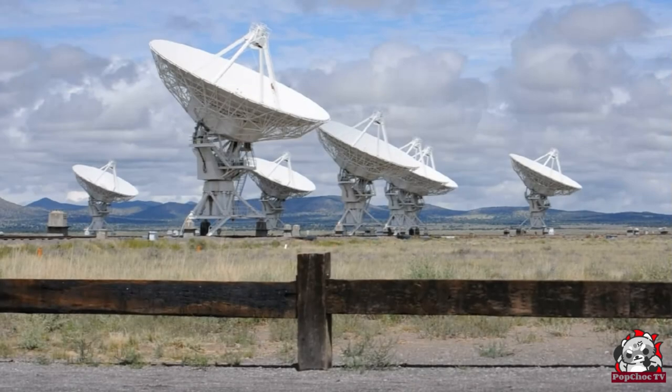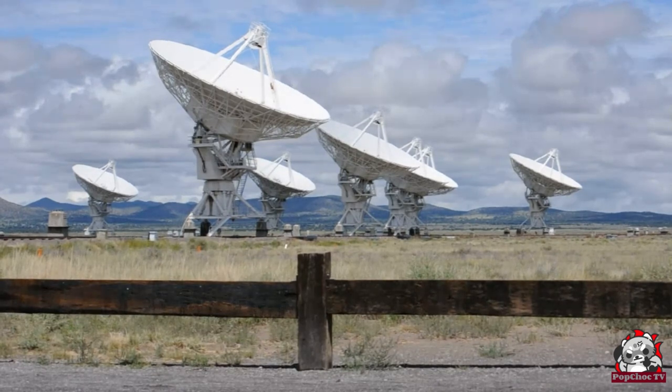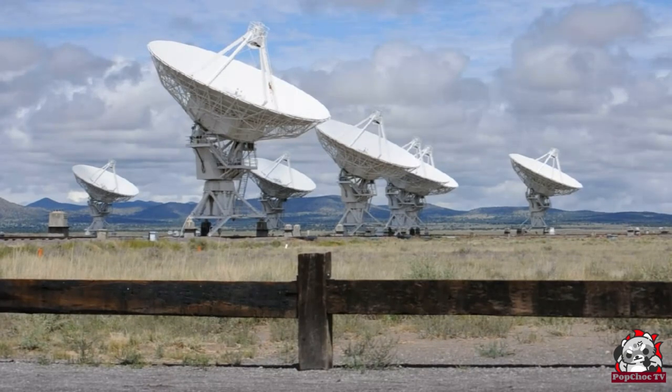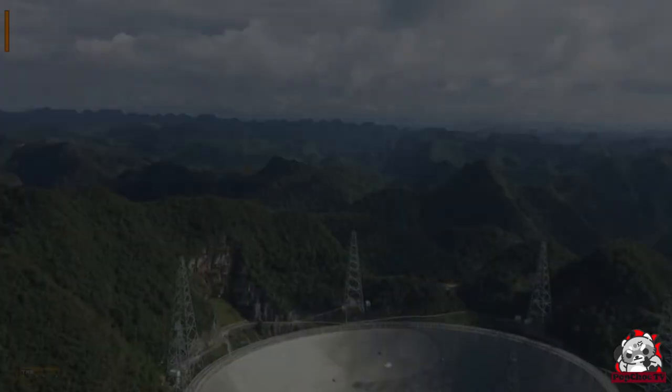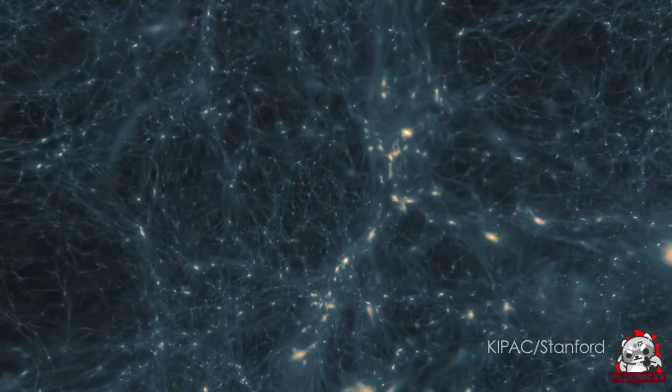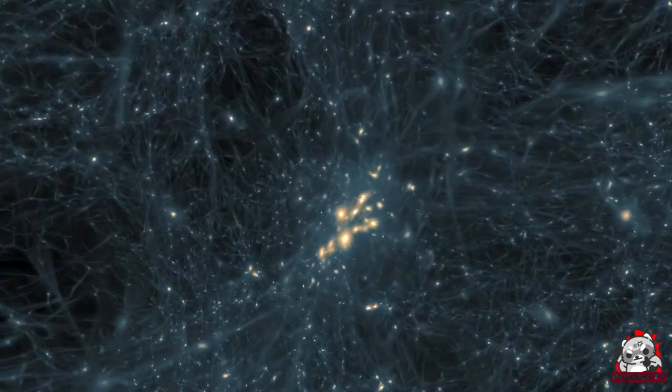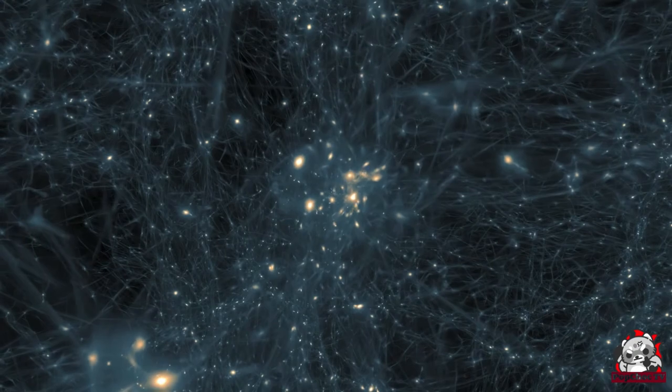At number 7, we have the mystery of fast radio bursts. Fast radio bursts, or FRBs, are extremely powerful and brief bursts of radio waves originating from deep space. First detected in 2007, these enigmatic signals have puzzled astronomers ever since. Some FRBs repeat, while others appear only once, adding to the mystery.